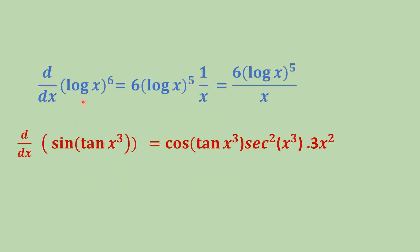The derivative of (log x) to the power 6: apply the power rule first. The power 6 comes in the beginning, giving 6 times (log x) to the power 5. Now calculate the derivative of log x, which is 1 over x. So the answer is 6(log x) to the power 5 times 1 over x, which can be written as 6(log x to the power 5) over x.